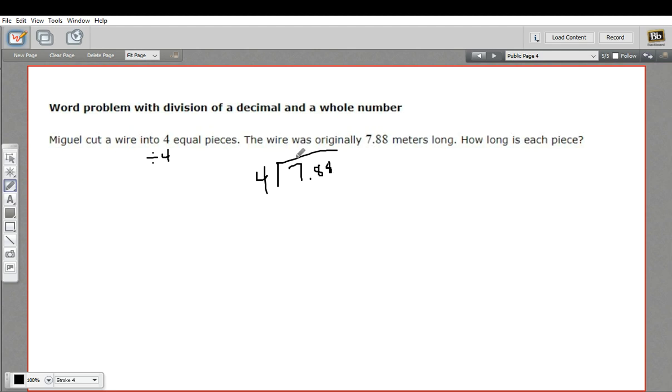How many fours in seven? That would be one. And then we get three, and we bring down the eight. How many fours in 38? So four times nine is 36.